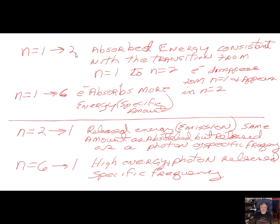Going from n=1 to n=2 indicates absorption of energy, moving an electron from a lower energy level to a higher one. Going from n=1 to n=6 involves a much larger amount of energy absorbed, since you're moving further from the nucleus to a more excited state. Going from n=2 to n=1 releases a very specific amount of energy — that's emission. Going from n=6 to n=1 would release a much higher energy photon — also emission.